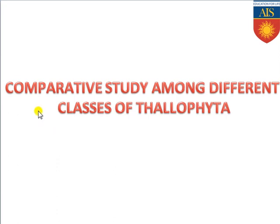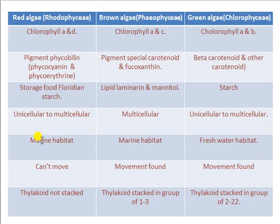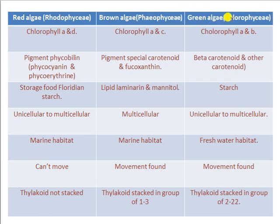Next is a comparative study among different classes of Thallophyta. First is red algae, second is brown algae, and third is green algae — these are the three different classes commonly found. Red algae are also called Rhodophyta, brown algae are called Phaeophyta, and green algae are called Chlorophyta.